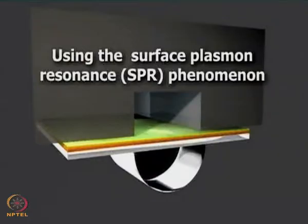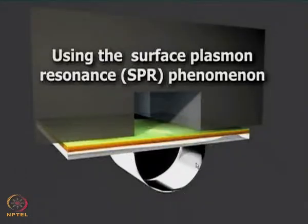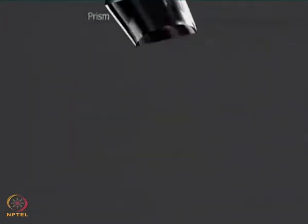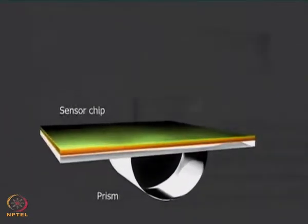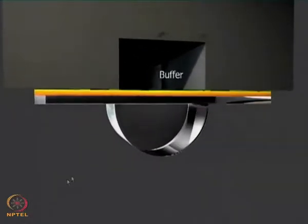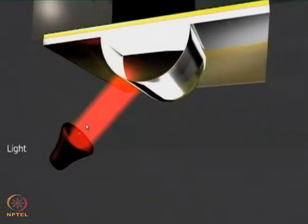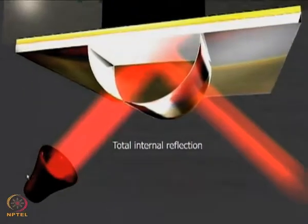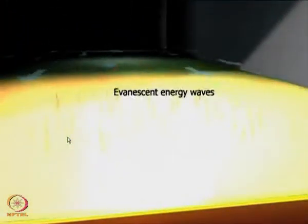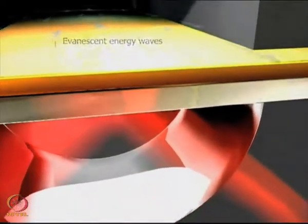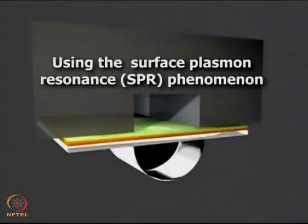What I show here is the basic SPR phenomenon. This is the SPR chip. On top of the SPR chip is a gold layer, and on top of it is a flow cell. At the bottom you see a hemispherical prism. The SPR phenomenon is pretty simple: when you have the prism and you shine a laser light through it, the light reflects at the angle of total internal reflection. Evanescent energy waves are created on top of the chip, and these evanescent energy waves are also called surface plasmons. These surface plasmons are the ones used to actually study biological interactions.